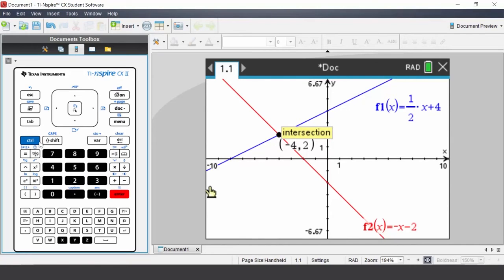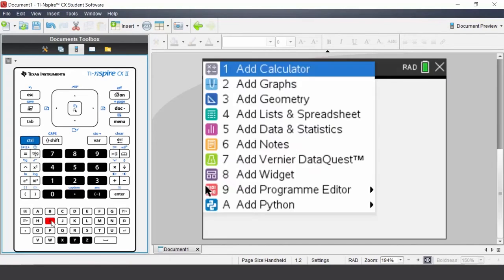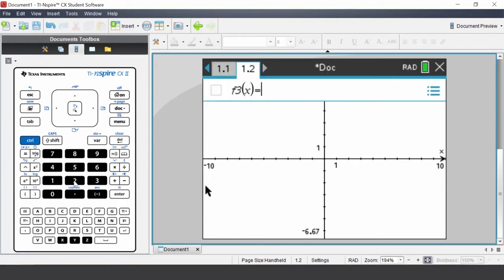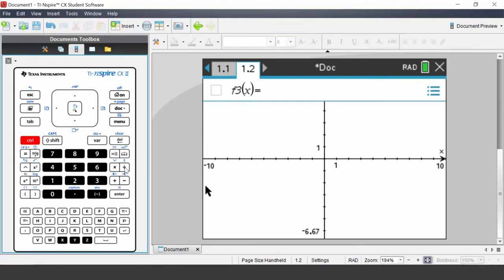Insert a new graphs application. Select add graphs. We are going to graph X cubed over 4, subtract X squared, subtract X and add 4. Control divide for the fraction template. Press enter.